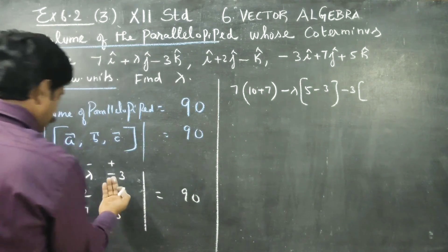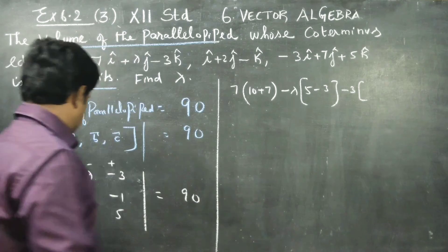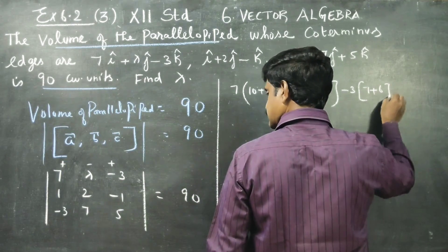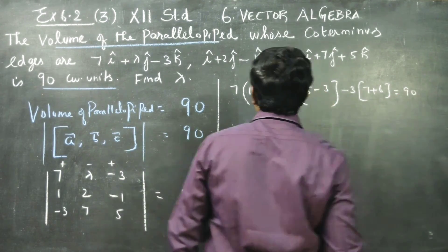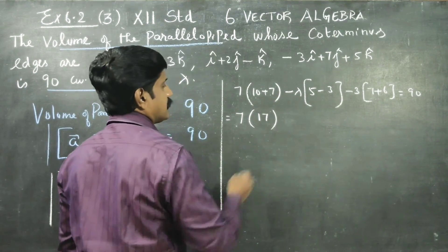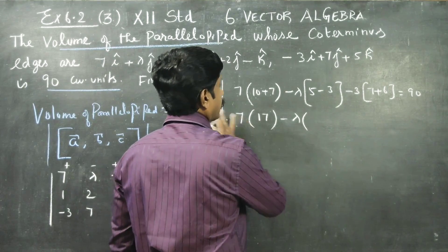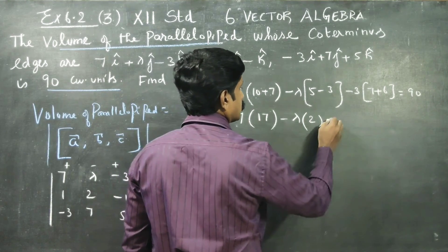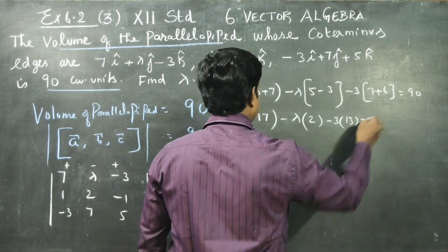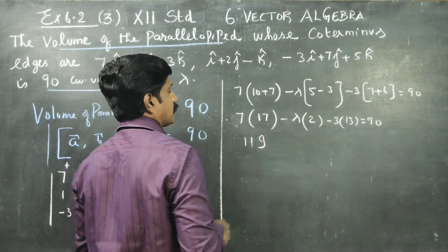7 plus 6 equals 13. This will become 17 minus lambda, times (2 minus 3) into 13, is equal to 90. Sum of 49 and 119.